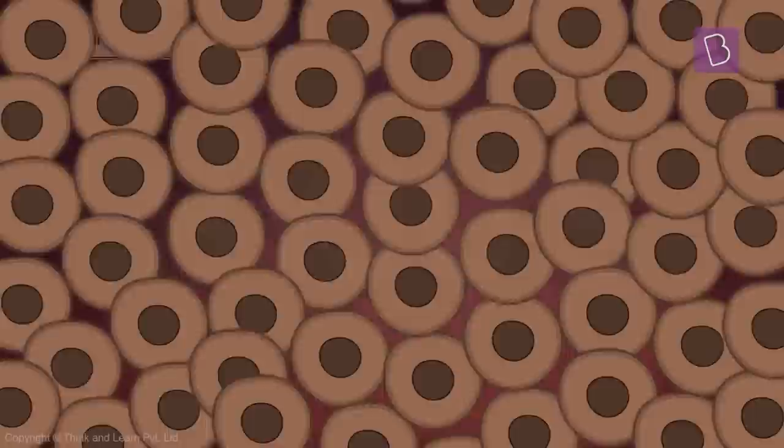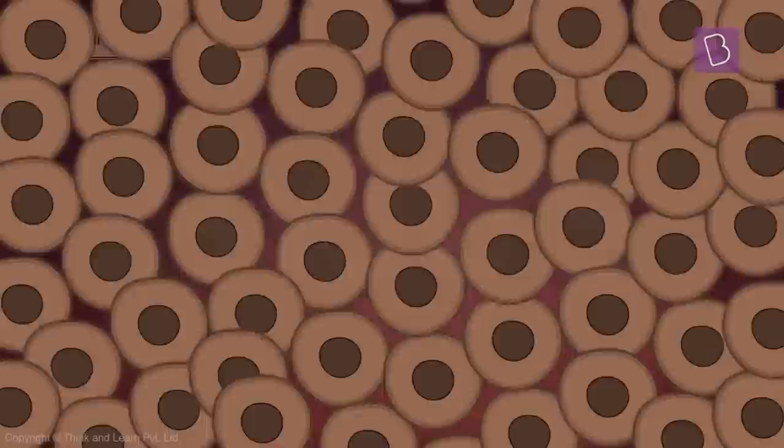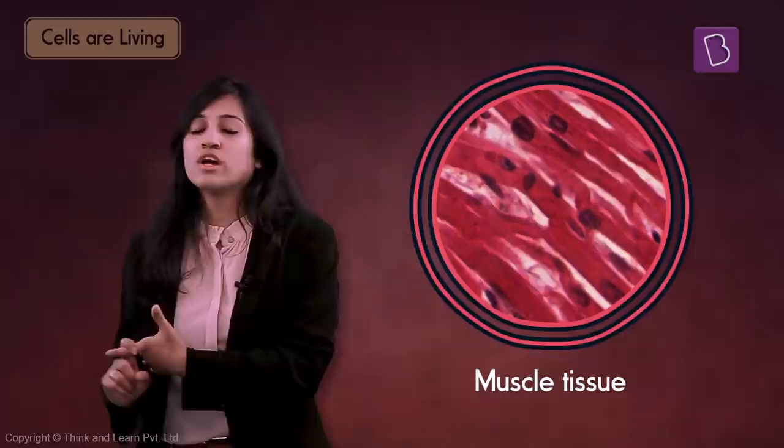After that, he did what Hooke did - he observed random stuff as well, like semen, blood, pond water, muscle tissue, and so on under his microscope. This is how he ended up observing microorganisms. He looked at them and thought, 'These guys are really small, they're small animals.'